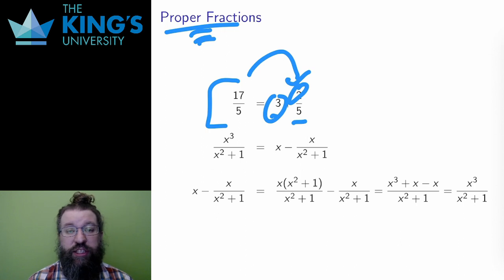This logic applies just as nicely to polynomials. A rational function is proper if the degree of the numerator is smaller than the degree of the denominator. Instead of the size of the number, it is the degree of the polynomial that now matters.